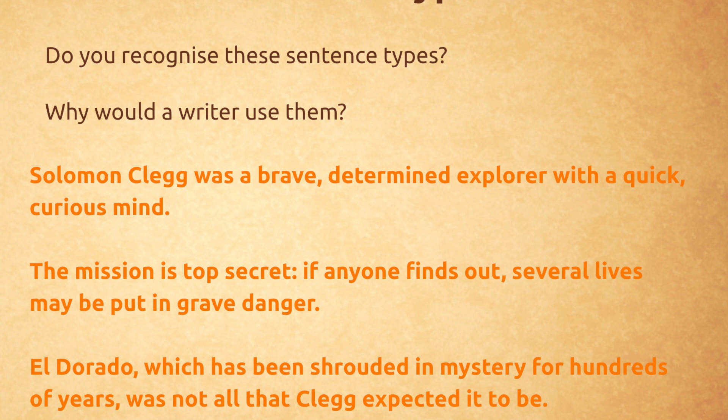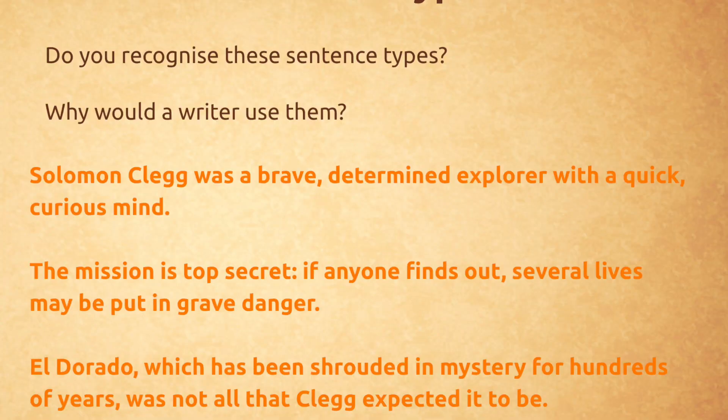Now, which one of these sentences is a DD sentence? It was the mission is top secret — there's a little colon. If anyone finds out, several lives may be put in grave danger. Description detail. That's what it was. Now, which one of these sentences was a noun, plus who, which, where sentence? It was El Dorado, which has been shrouded in mystery for hundreds of years, was not all that Clegg expected it to be.